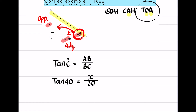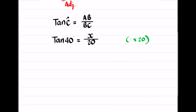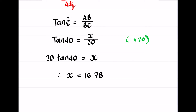I want x by itself, so I multiply both sides by 20 to get rid of the denominator. That gives 20 × tan(40°) = x. Typing that into my calculator: x equals 16.78 centimeters.